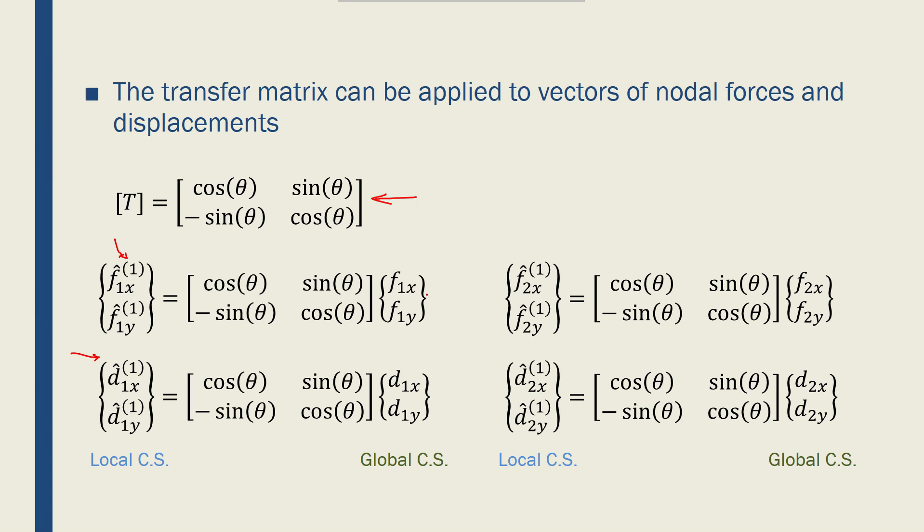Now I have the global ones without the hat signs, both f and d for node 1, and here I've written them for node 2. Basically the same. So if I want to convert the nodal forces from the local coordinate system to the global coordinate system, I would multiply that by the transformation matrix that I have. So the local ones are equal to T, transformation matrix, times the global ones.